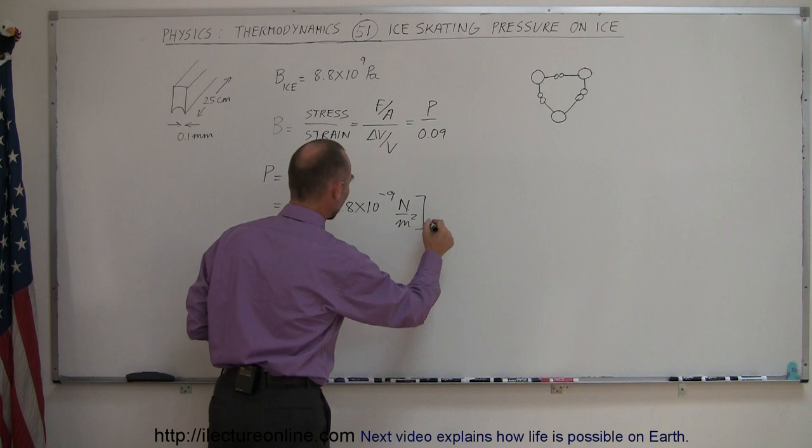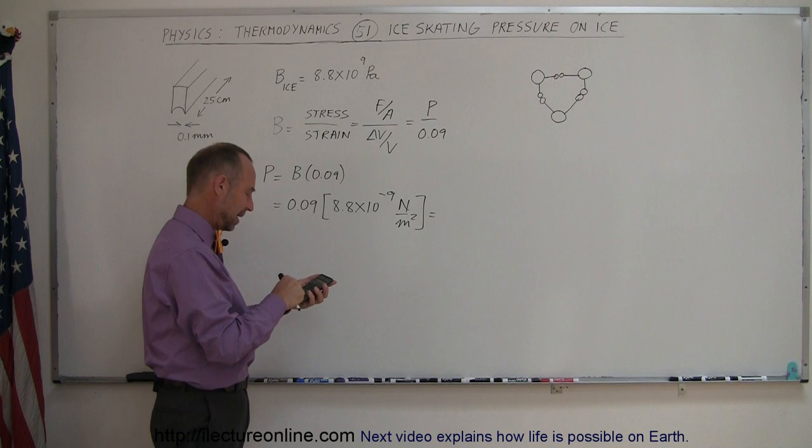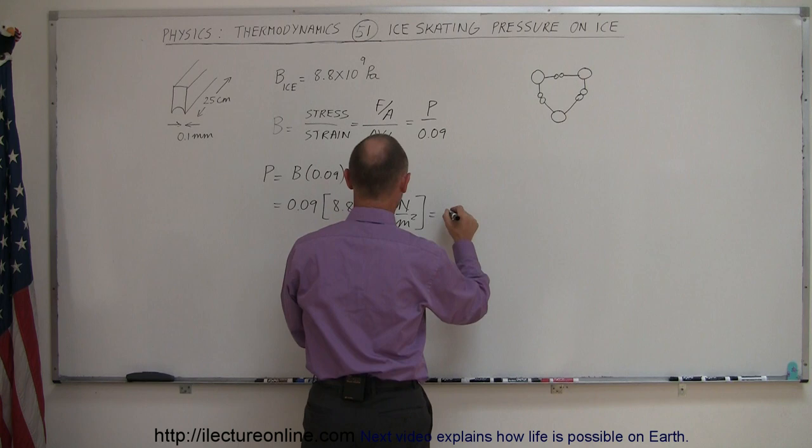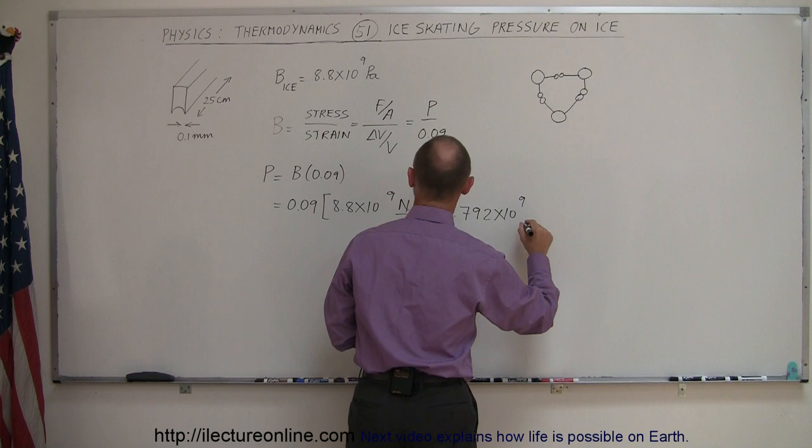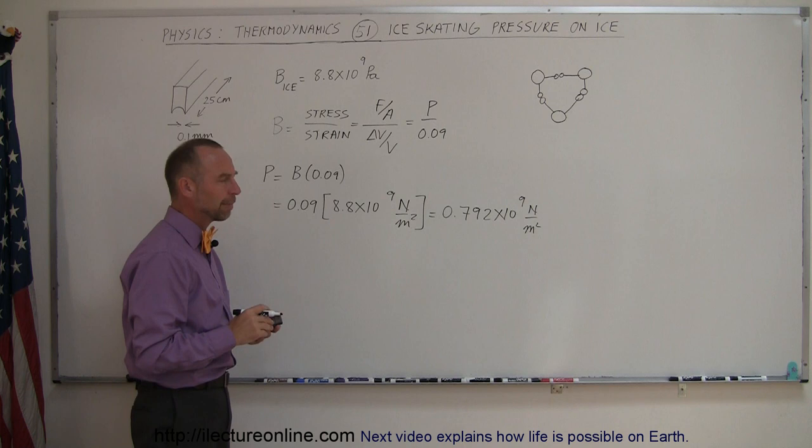If you multiply that through, we have 8.8 times 0.09 equals—that would be 0.792 times 10 to the positive 9 Newtons per square meter.